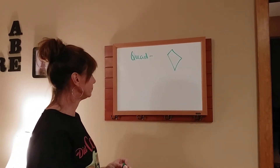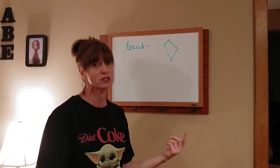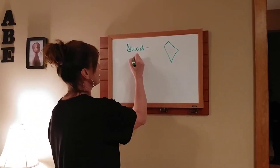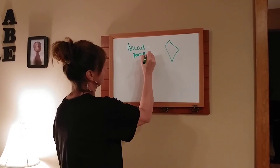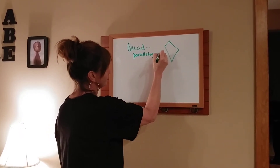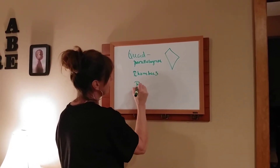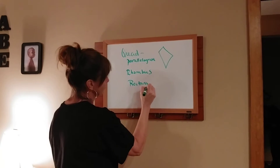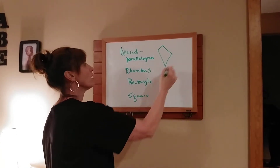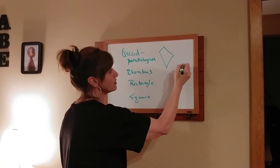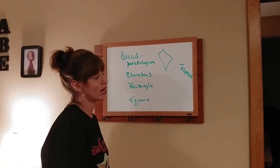Now, the specific quadrilaterals which I listed for you and you had to give me definitions for started out as parallelogram. Then you had rhombus, rectangle, square. And then way over here in the world of its own is trapezoid, and I'll explain why in just a minute.